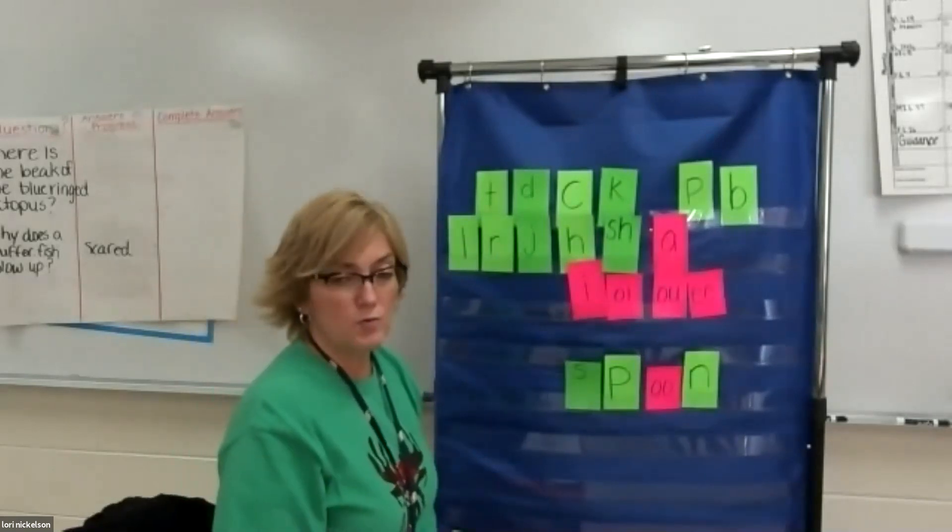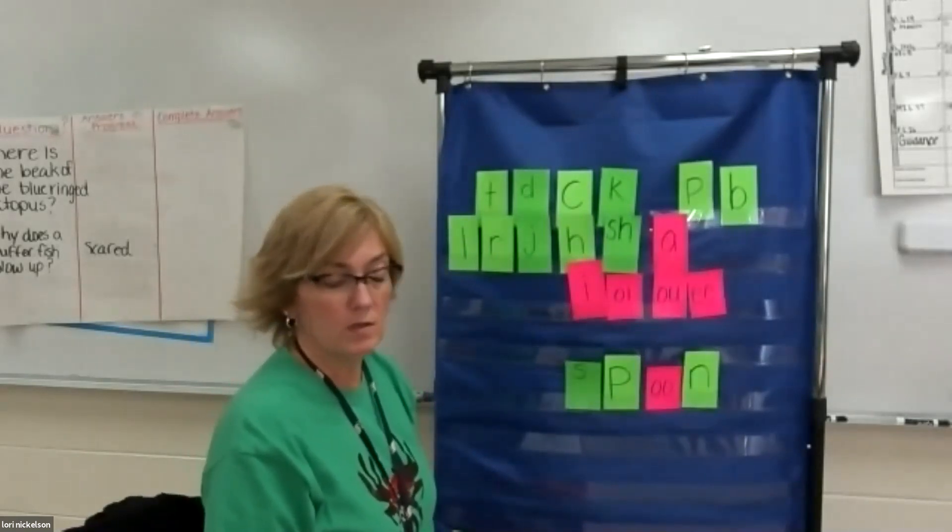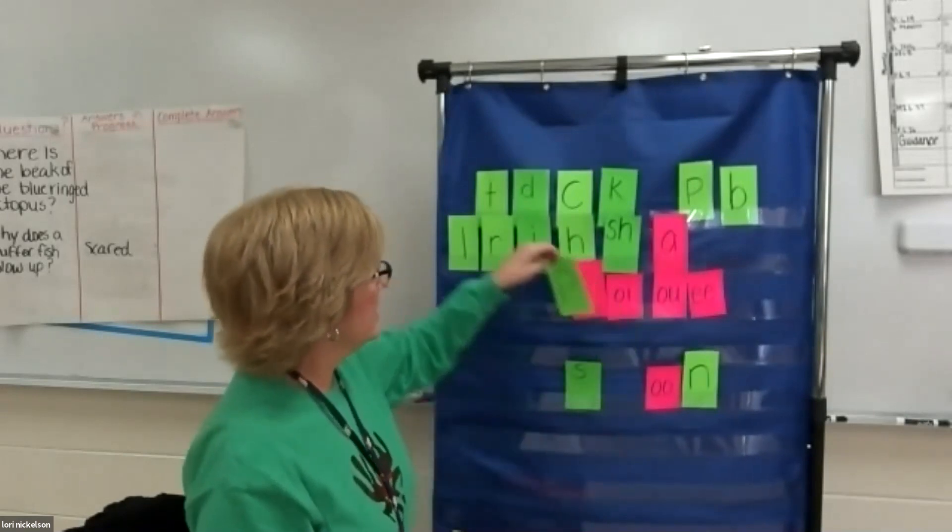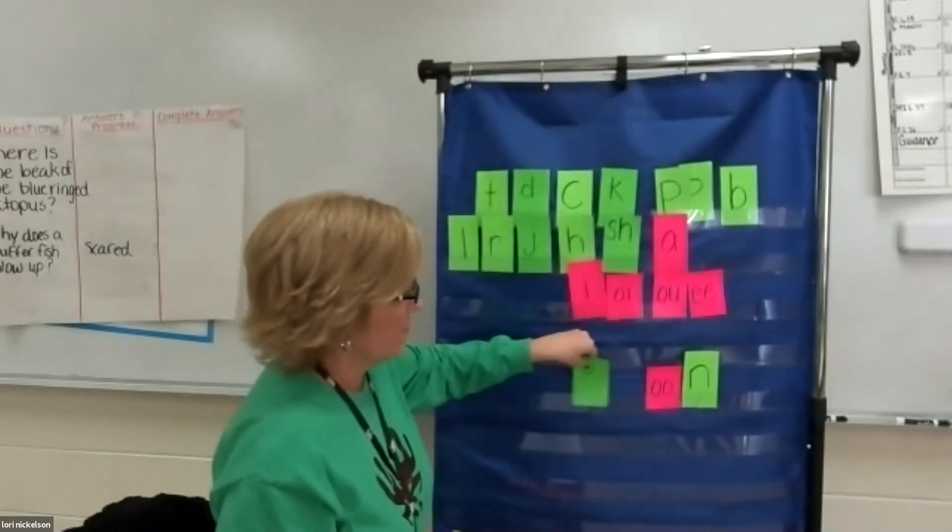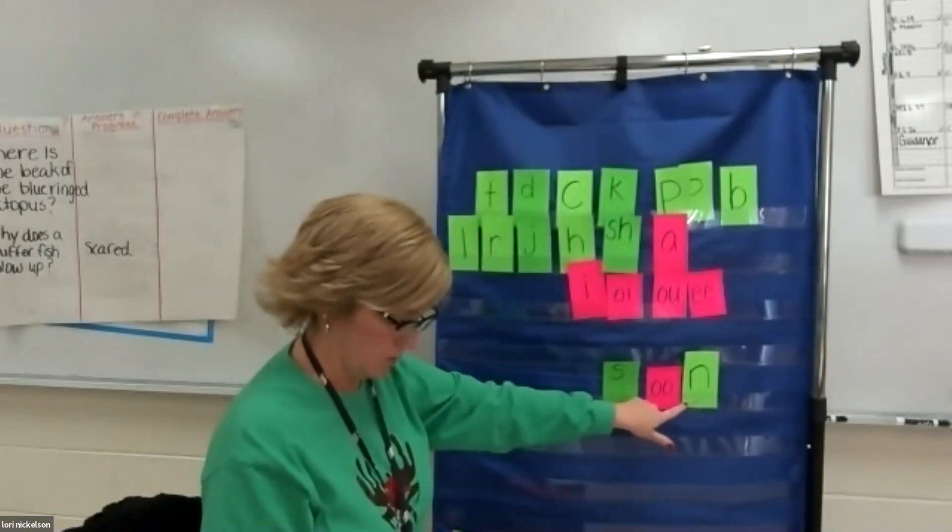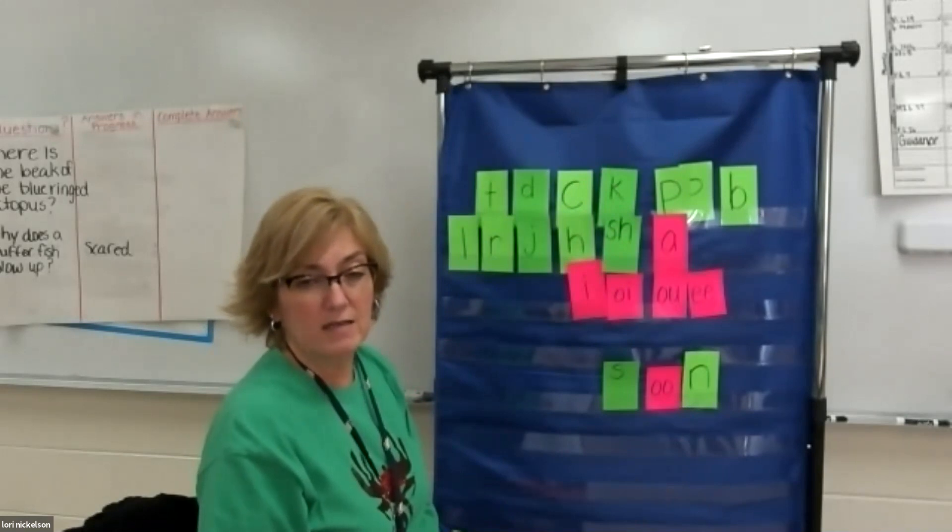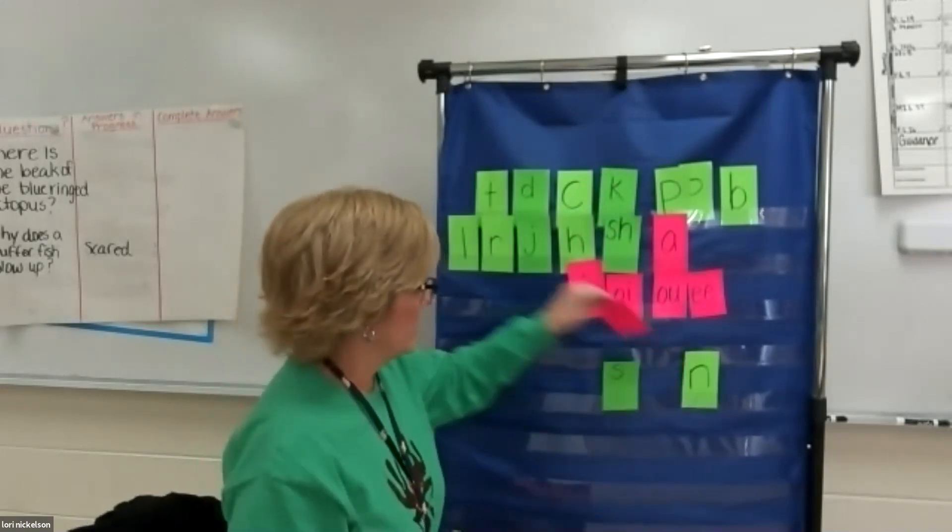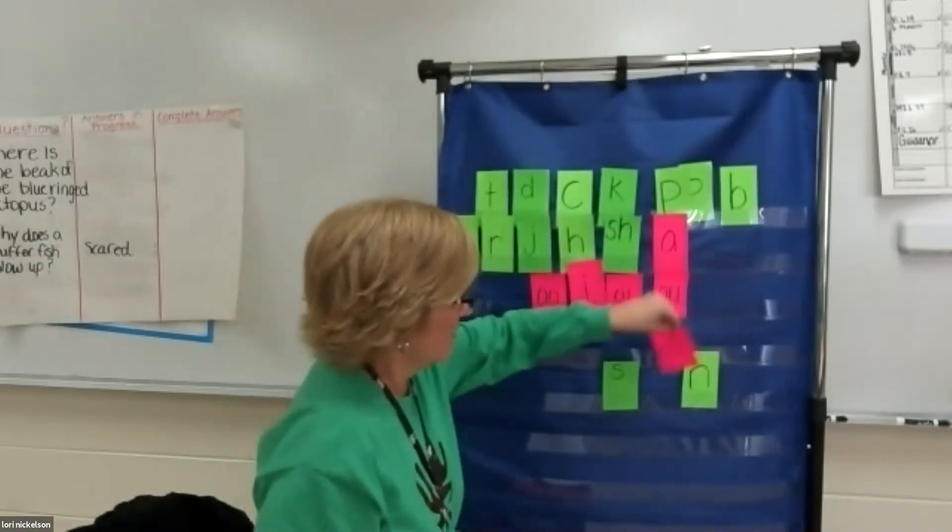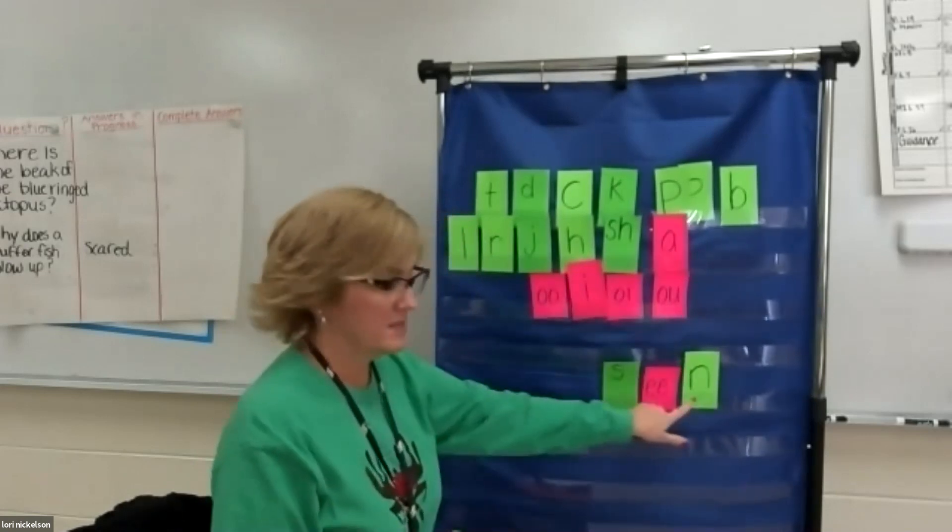So what if I made spoon into soon? I would take out the P. And now I have soon. Good. What if I made soon into seen? How would I do that? I would take the O's out and add the double E. And now I have seen.